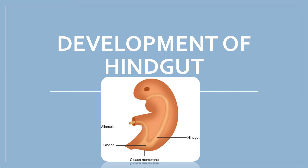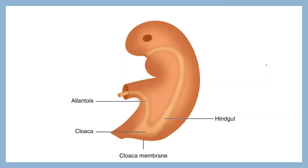Hello friends, welcome back to my channel. Today in this video we are going to see about development of hindgut. The three important structures which are involved in the development of hindgut: the first one is the allantois, then cloacal membrane, and the third one is the urorectal septum.